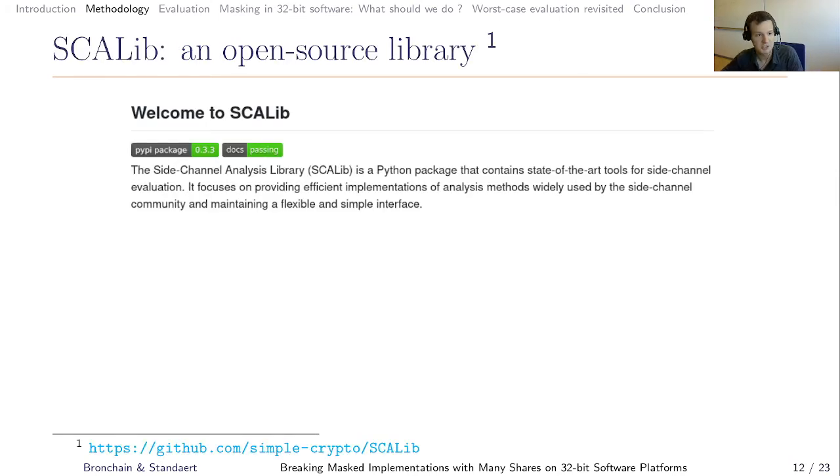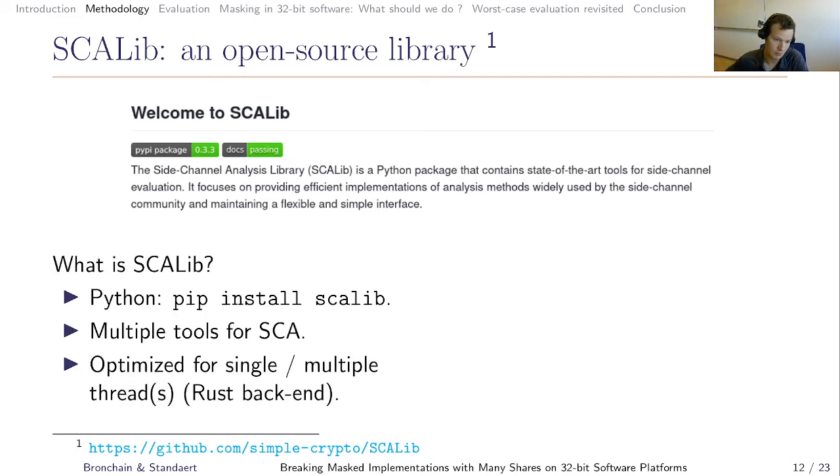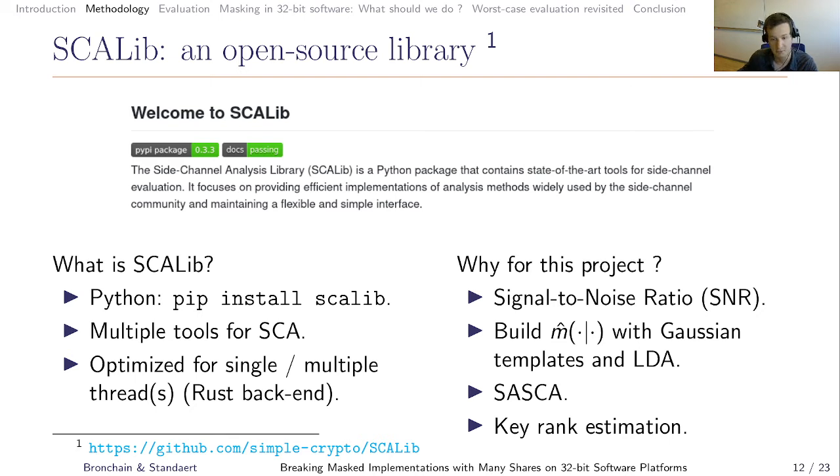This methodology has been implemented with Scalib, which is a Python library that we developed with my colleague, Guy Cassiers. What is it? It's a Python package that you can install simply by running pip install Scalib. There is multiple tools for side-channel analysis, and it's optimized to run on a single or multiple threads. In this project, we use it to compute signal-to-noise ratio, to model the leakage for each of the shares, to run SASCA, and to run a key enumeration.